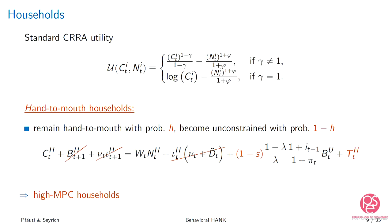Hand-to-mouth households do not participate in financial markets and therefore will have high MPCs — they will basically just spend whatever income they have, with an adjustment in labor supply. These will be the high-MPC households.